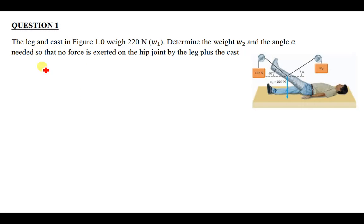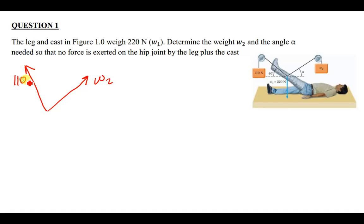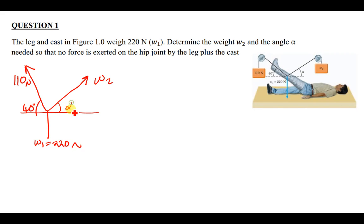The question reads: the leg and cast in figure 1 weighs 220 newtons. I'm going to draw a free body diagram here. I have a force coming from this side — I'll assume all forces from this joint are in tension. This one is called W2, this one is 110 newtons. Then I also have the weight of the leg, which is called W1, given as 220 newtons. The angles given are 40 degrees on this side, and alpha on this side. The question asks us to calculate W2 and the angle alpha.